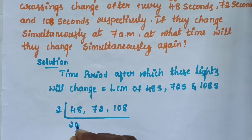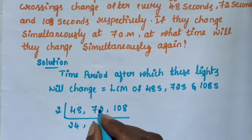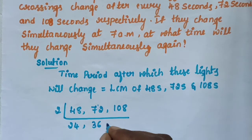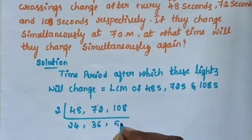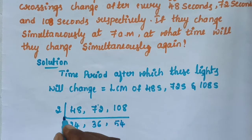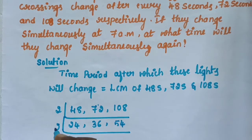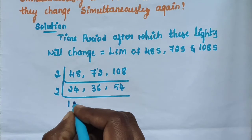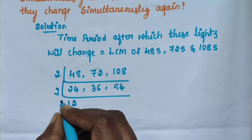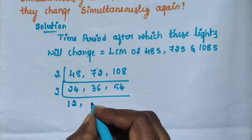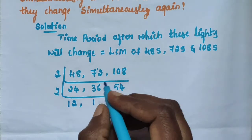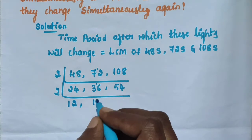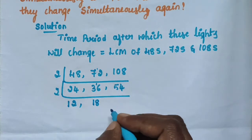2 twos are 4, 2 fours are 8, 2 threes are 6 carry 1, 2 sixes are 12, 2 fives are 10, 2 fours are 8. Again take 2: 2 ones are 2, 2 twos are 4, 2 twelves are 24, 2 ones are 2 carry 1, 2 eights are 16, 2 eighteens are 36.